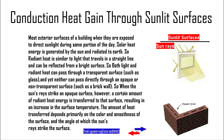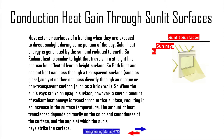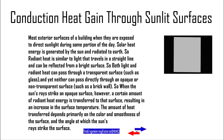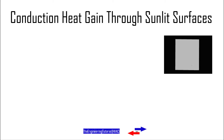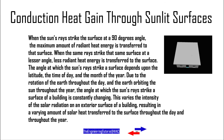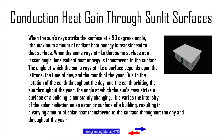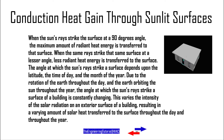When the sun's rays strike an opaque surface, a certain amount of radiant heat energy is transferred to that surface, resulting in an increase in the surface temperature. The amount of heat transfer depends primarily on the color and smoothness of the surface, and the angle at which the sun's rays strike the surface. When the sun's rays strike the surface at a 90-degree angle, the maximum amount of radiant heat energy is transferred. When the same rays strike that surface at a lesser angle, less radiant heat energy is transferred.